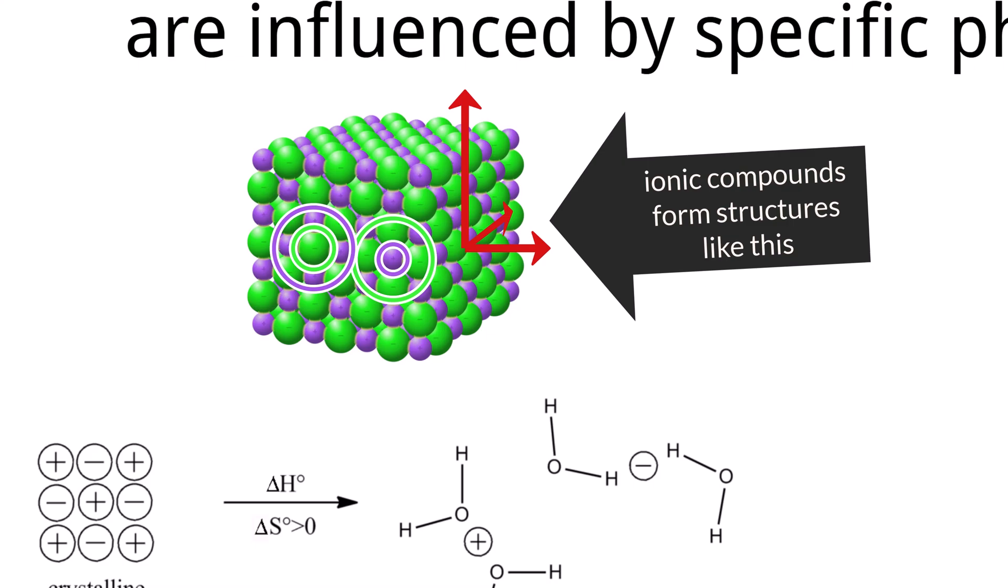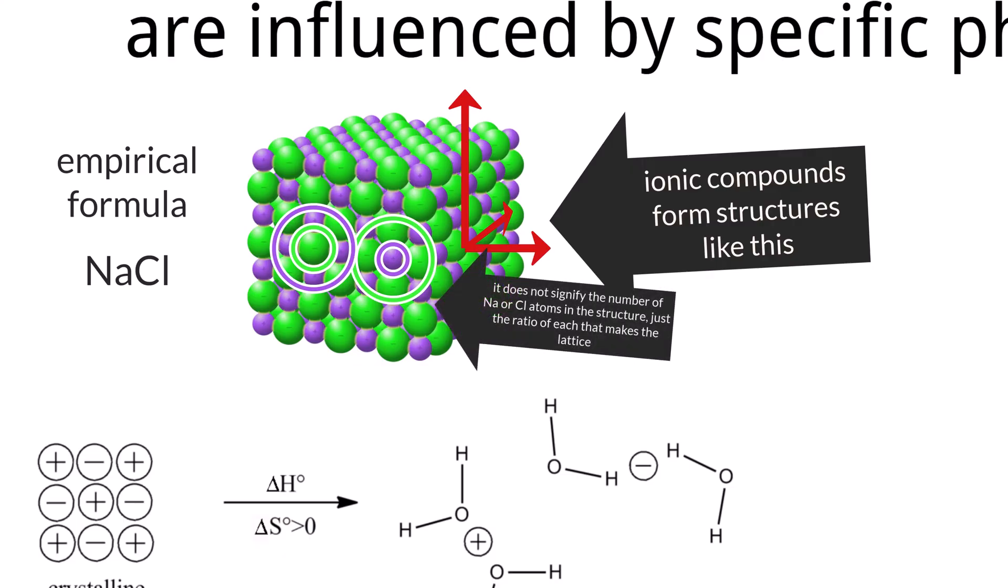Because these lattice structures are so extensive, we represent ionic compounds using empirical formulas rather than molecular formulas. As we already know, an empirical formula shows the simplest whole number ratio of the ions in the compound. For example, the empirical formula for sodium chloride is NaCl, indicating a one-to-one ratio of sodium ions to chloride ions within the crystal lattice. It doesn't imply the existence of individual NaCl molecules. The actual structure is a continuous network of these ions.